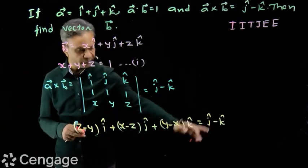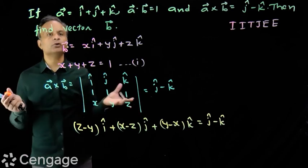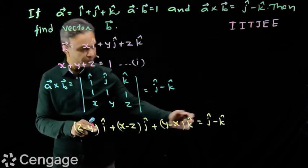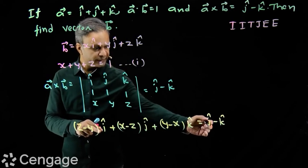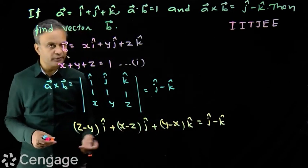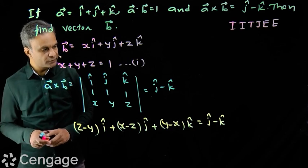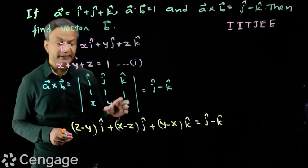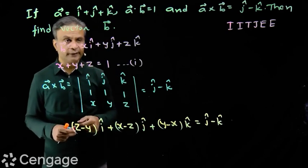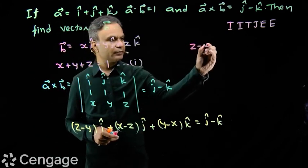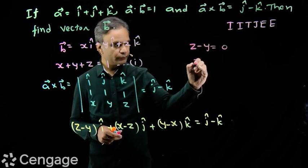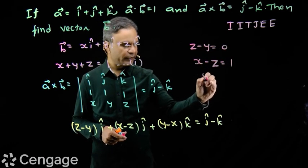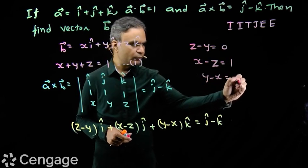Since i, j, k are non-coplanar and independent vectors, we compare coefficients. Comparing coefficients of i, j, and k gives us three equations: z minus y equals 0, x minus z equals 1, and y minus x equals minus 1.